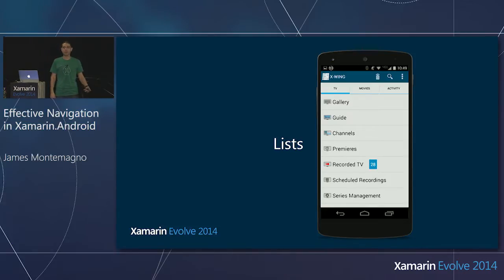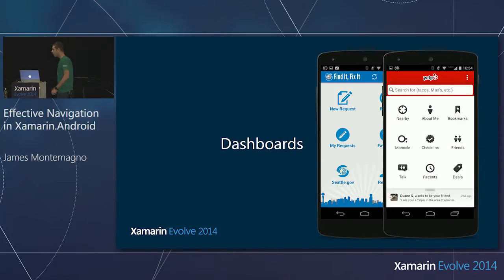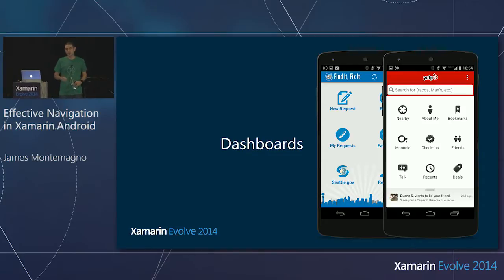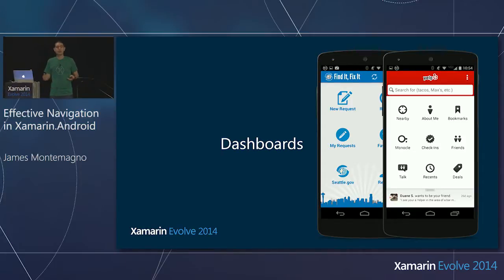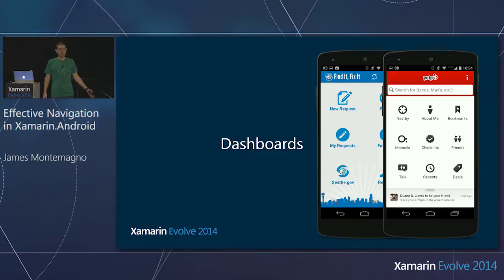If I take the same exact thing and put it on a seven-inch tablet, there's a lot of white space. A very early paradigm in Android was the dashboard — similar to a list, except it's in a grid. For developers, this made it really simple to say: I have nine different sections of my application, put them in a nice grid view with some nice icons that my designers gave me.